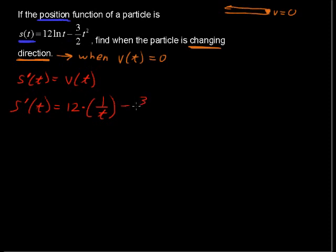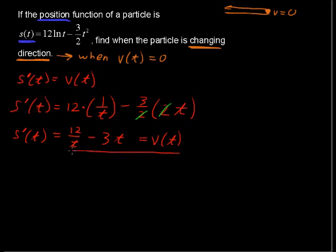Minus 3 halves times the first derivative of t squared. So that is 2t. These 2's are going to cancel out, so we'll just have 3t. I could have just written this 12 over t minus 3t, and that equals the velocity function. But I just want to make sure everyone's on the same page here. That is our velocity function.